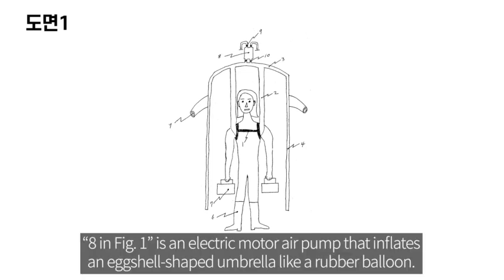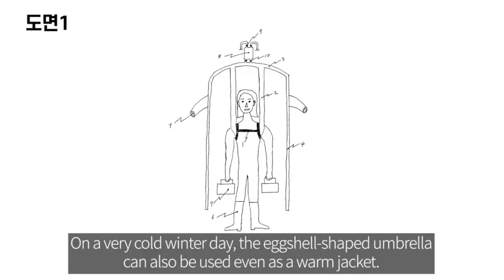8 in Figure 1 is an electric motor air pump that inflates an egg-shaped umbrella like a rubber balloon. On a very cold winter day, the egg-shaped umbrella can also be used even as a warm jacket.